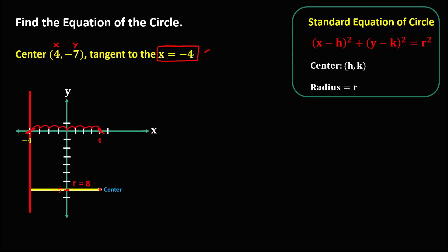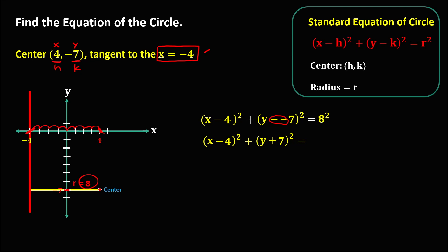We can write the standard equation: x minus h, h is positive 4, quantity squared, plus y minus k, k is negative 7, quantity squared, equals 8 squared. Simplifying the double negative becomes positive, so x minus 4 quantity squared plus y plus 7 quantity squared equals 8 squared, which is 64. This is the standard equation.